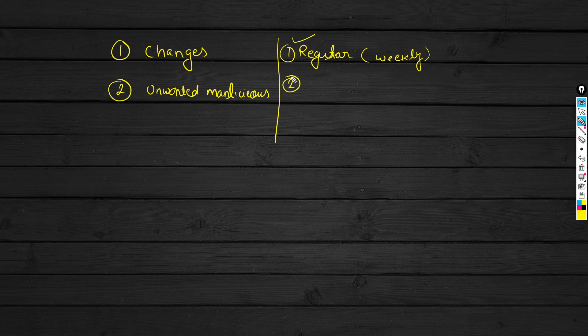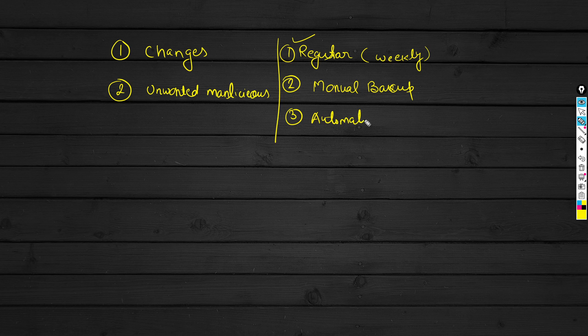Now, how you take the backup: if you have a small number of devices in your network, you can go for the manual backup — that's what I'm going to show you today. But in case you have a large environment, like two thousand, three thousand, or hundreds of devices, it's not really good to take the FortiGate firewall backup manually. In that case you go for automation, which I won't cover in this session.